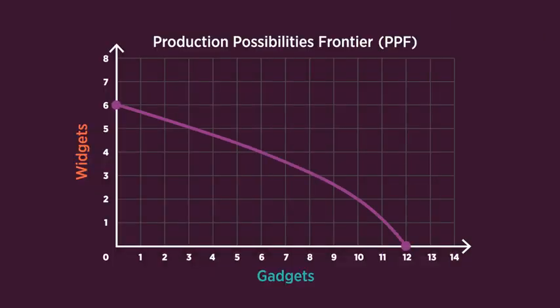Here's where the curved line comes in. It shows that opportunity cost varies along the frontier. Let's increase widget production in increments of 2 again until only widgets and no gadgets are produced, but this time we'll consider opportunity cost that varies along the frontier. This point remains the same — Econ Aisle can produce 12 units of gadgets and 0 widgets. Here's widget production increased by 2. At this point, Econ Aisle can produce 10 gadgets and 2 widgets. The opportunity cost of producing 2 widgets is 2 gadgets.